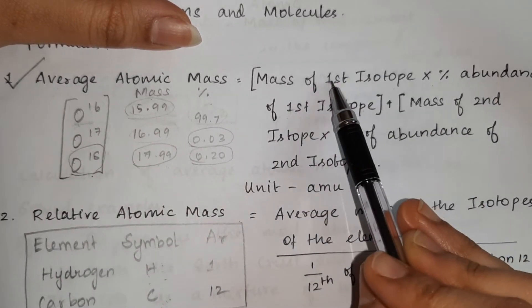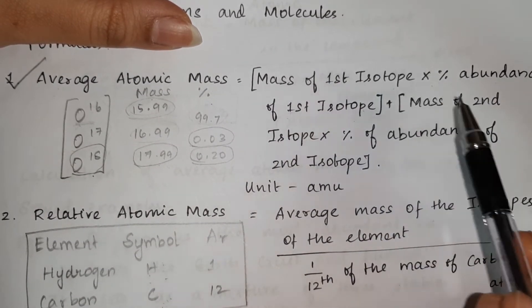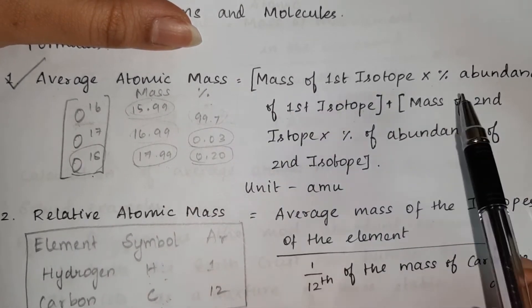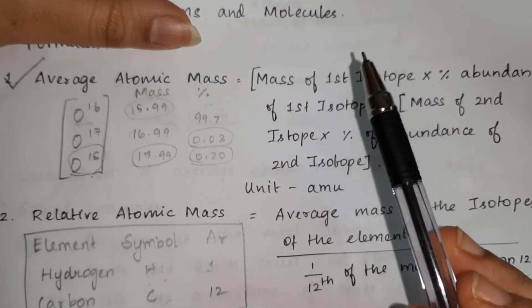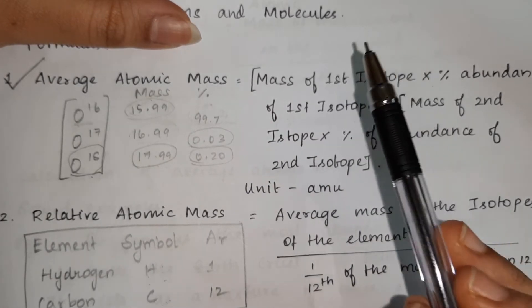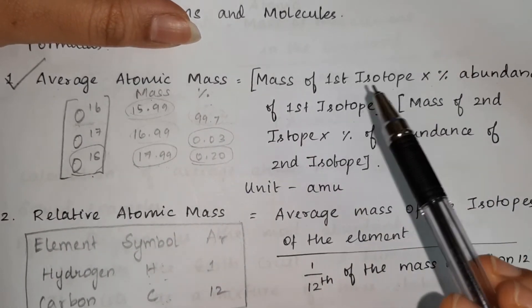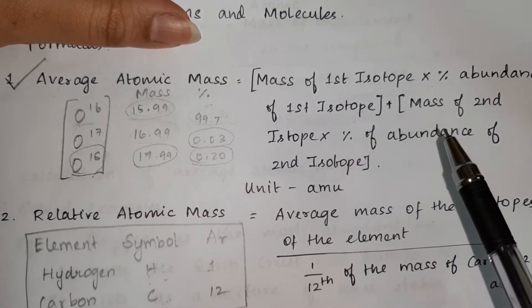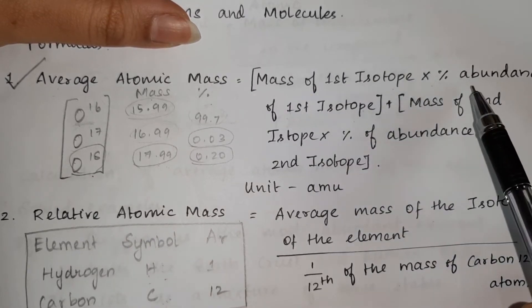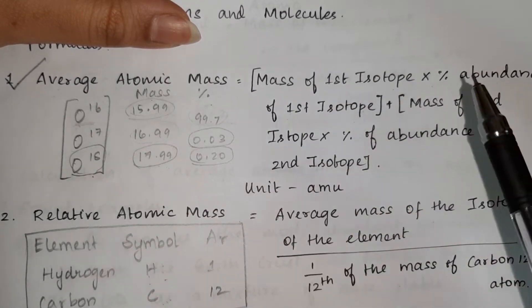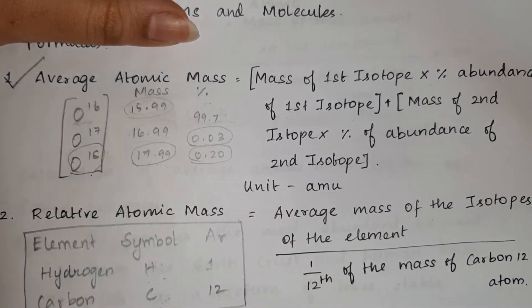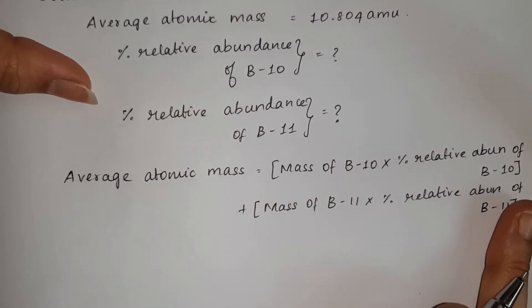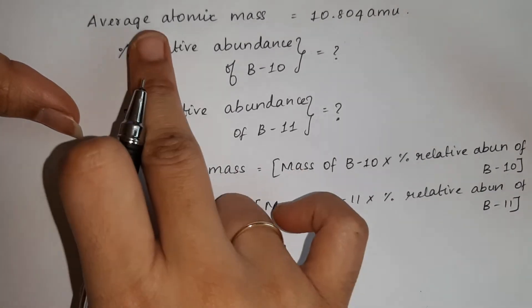The first isotope is Boron-10 and the second isotope is Boron-11. We know the mass of Boron-10 is 10 and the mass of Boron-11 is 11. This is percentage abundance, so we can use this formula to get the average atomic mass.